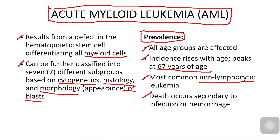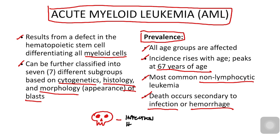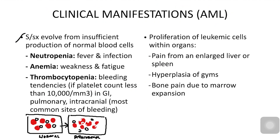Death in AML occurs secondary to infection or hemorrhage. Mortality is not caused by the cancer itself, but by complications: infection due to a depressed immune system and hemorrhage because bleeding factors are affected. These two are the most common causes of death in AML patients.